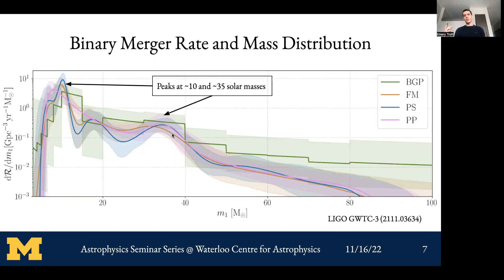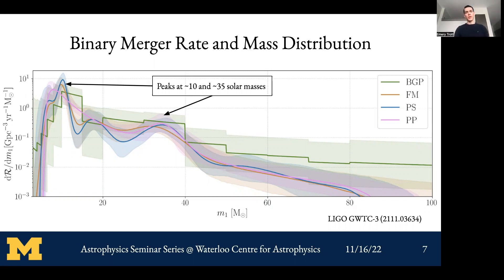A paper earlier this year suggested the 35 solar mass peak could also be explained by hierarchical mergers in globular clusters with smaller inspiral times, though that's still an open question — there were some spin conditions required to match this population exactly. This is the type of distribution we're looking at with the power law plus peak model.